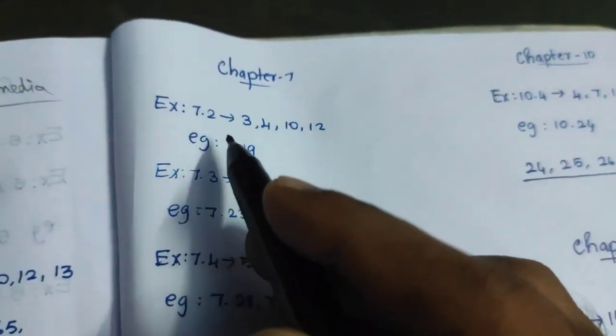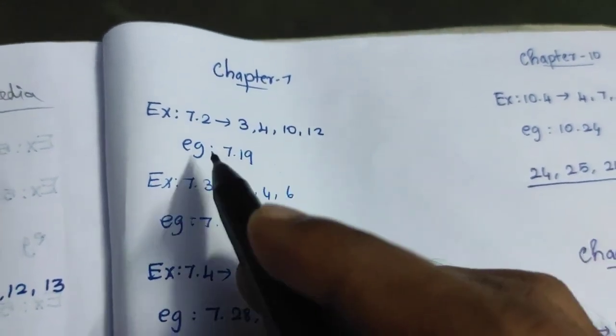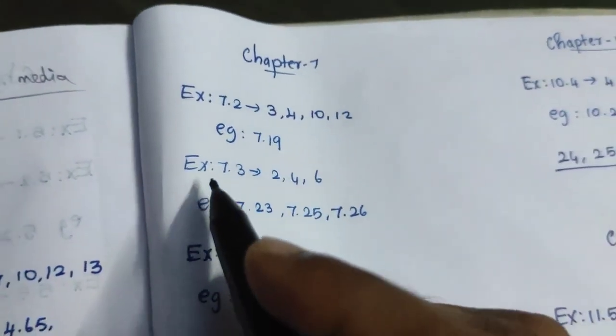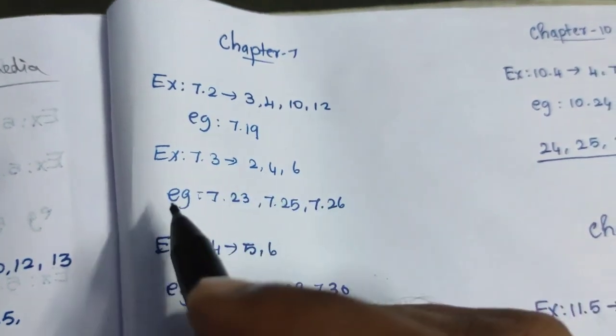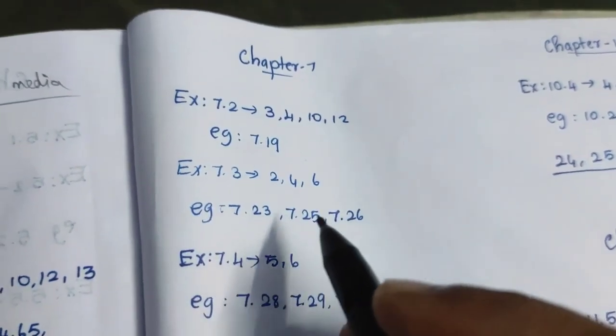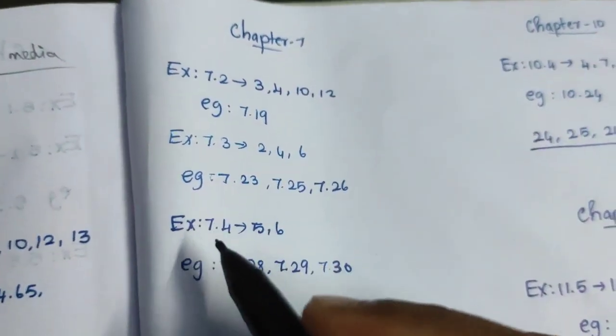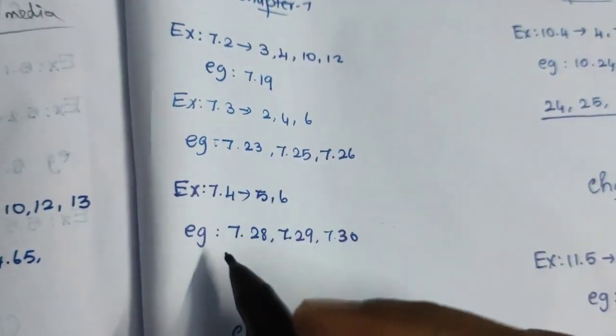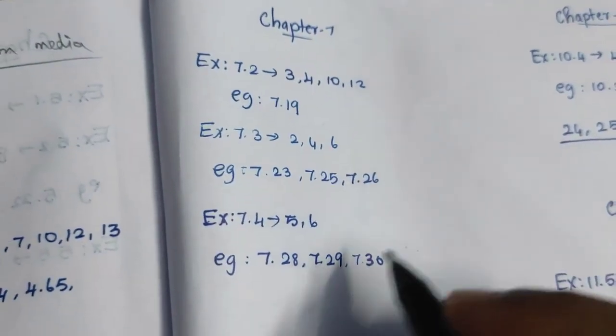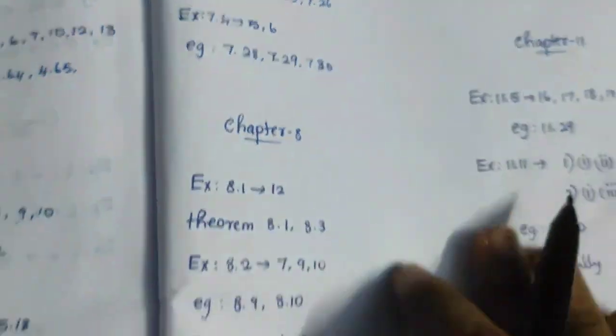Seventh chapter. Exercise 7.2, 3, 4, 10, 12. Example 7.19. Example 7.3, 2, 4, 6. Example 7.23, 7.25, 7.26. Example 7.4, 5, 6. Example 7.28, 7.29, 7.30. This is the seventh chapter.